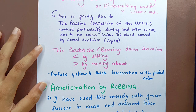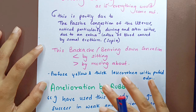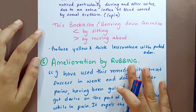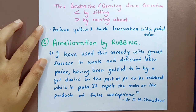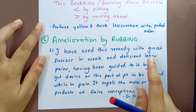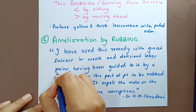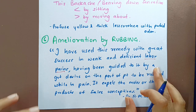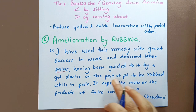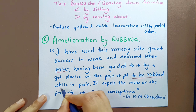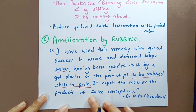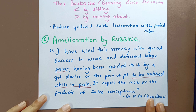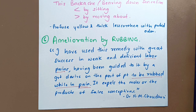The sixth characteristic is amelioration by rubbing. Dr. Chaudhary says he has used this remedy with great success in weak and deficient labor pains, guided by the patient's great desire to be rubbed while in pain. It also expels moles or products of false conceptions.